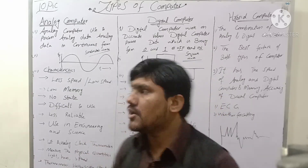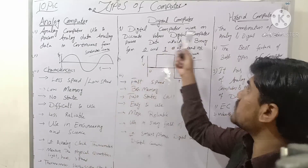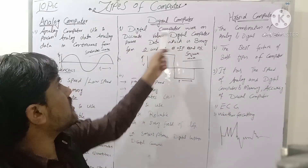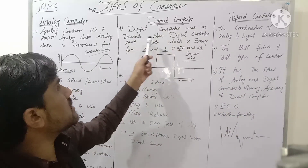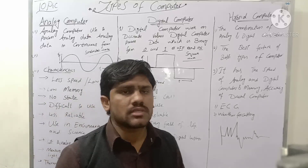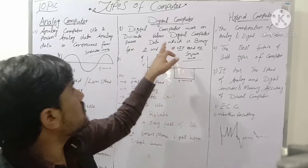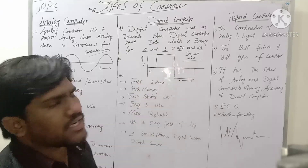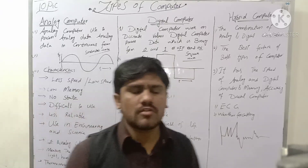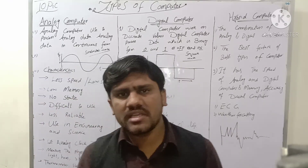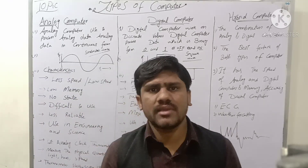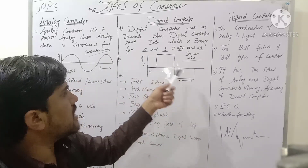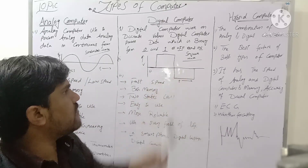Now, what is a digital computer? A digital computer works on discrete values. Digital computers process data which is in binary form — binary form means zero and one, where zero means off and one means on. These values produce a scale, or square, waveform.